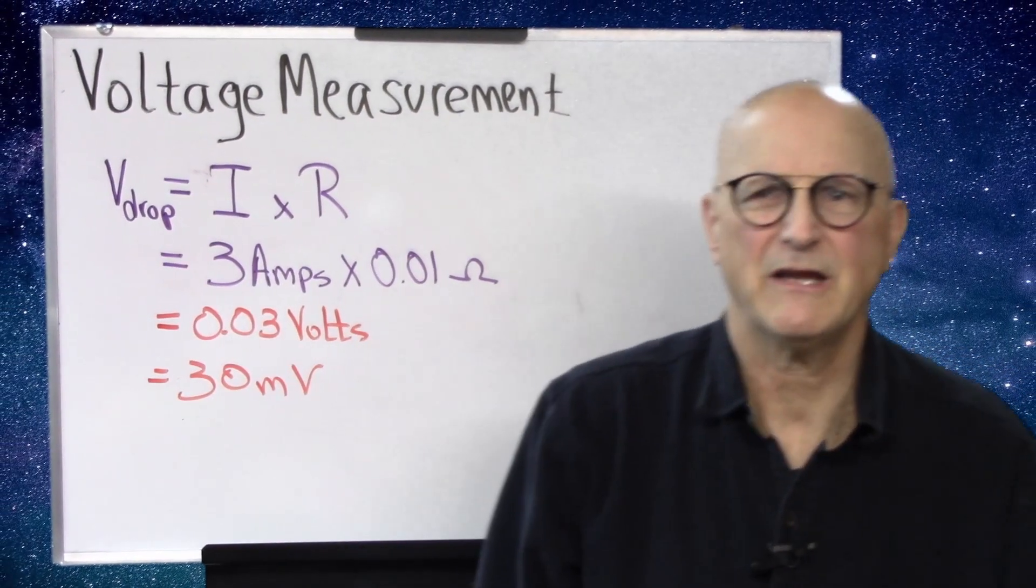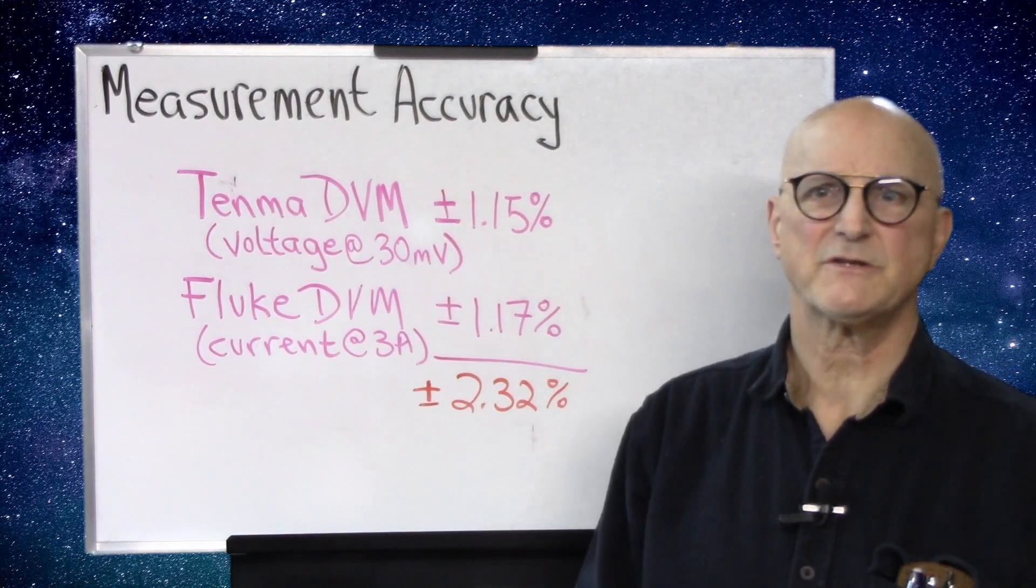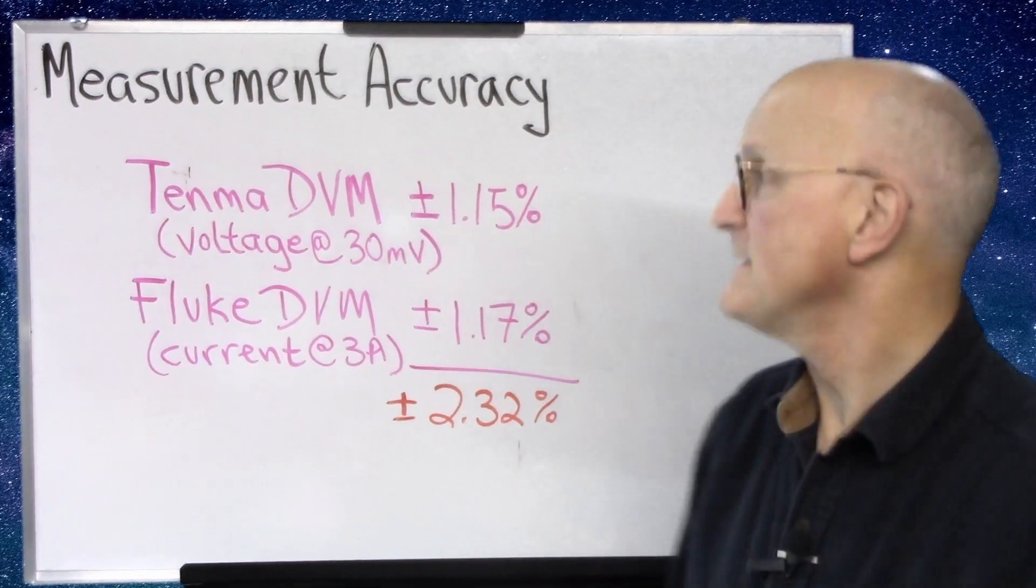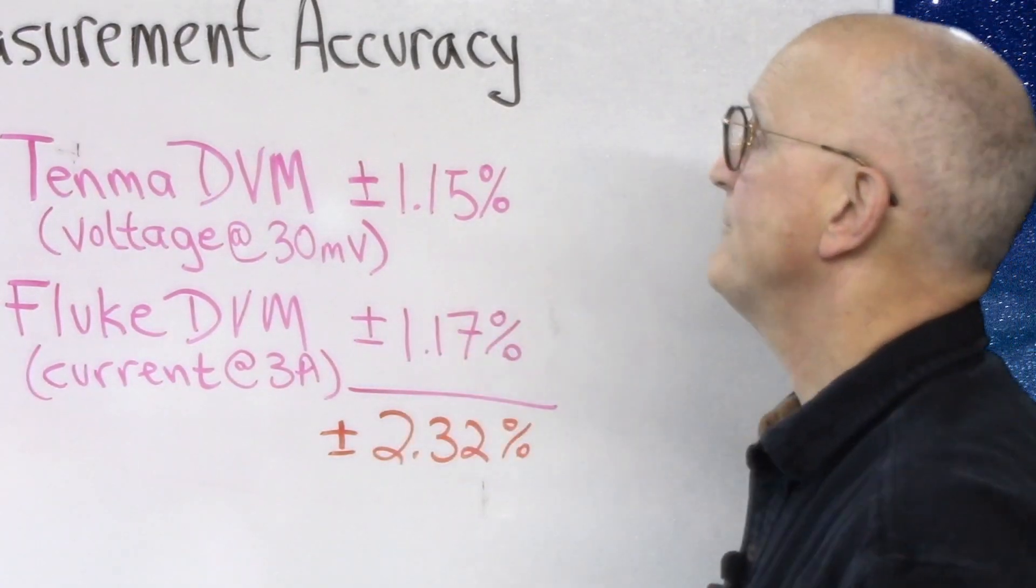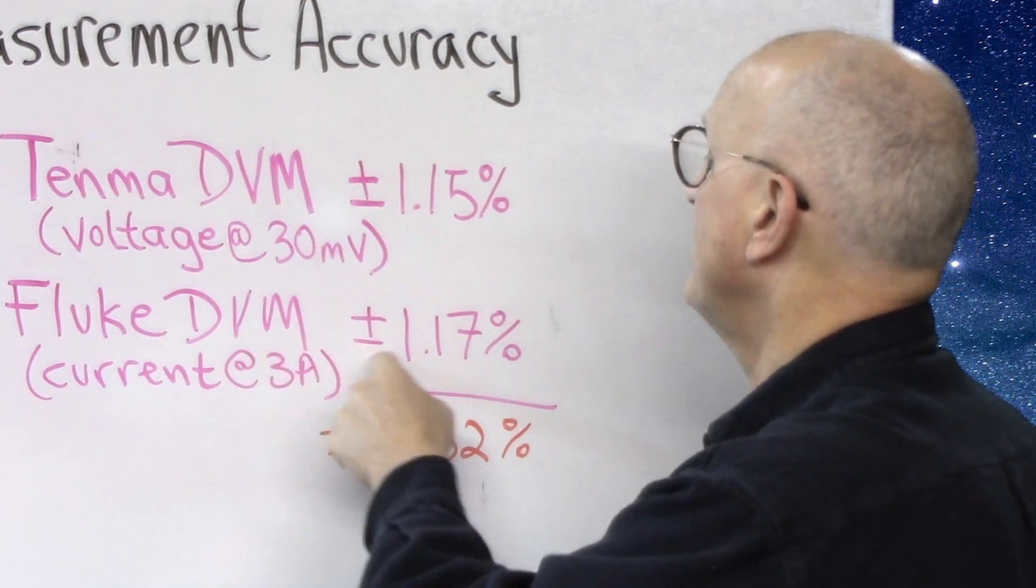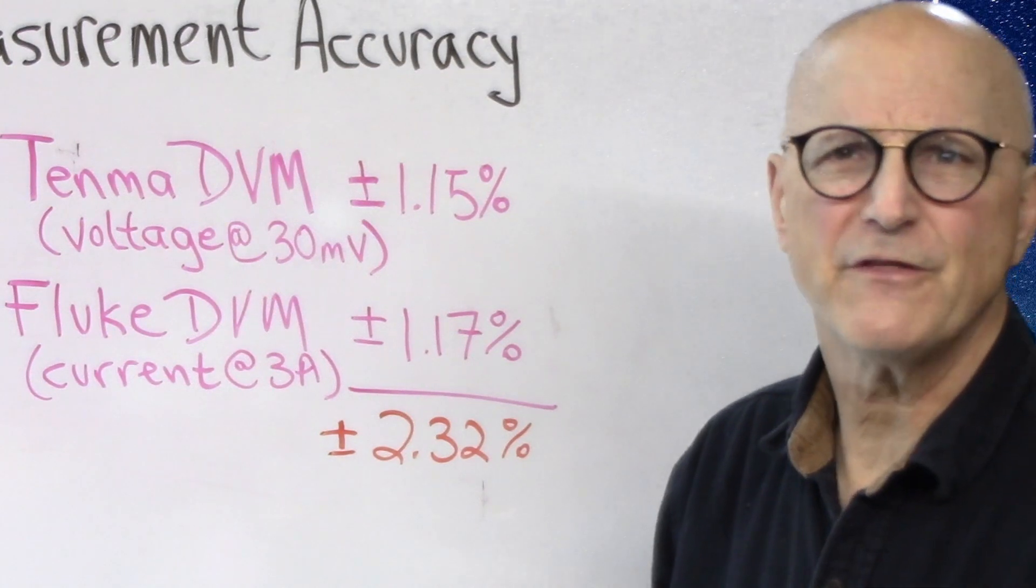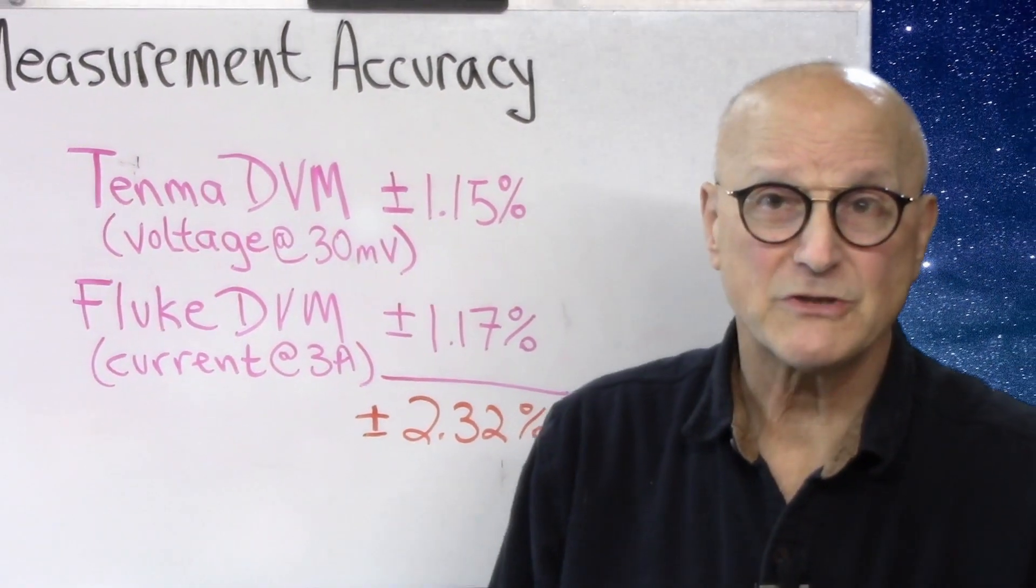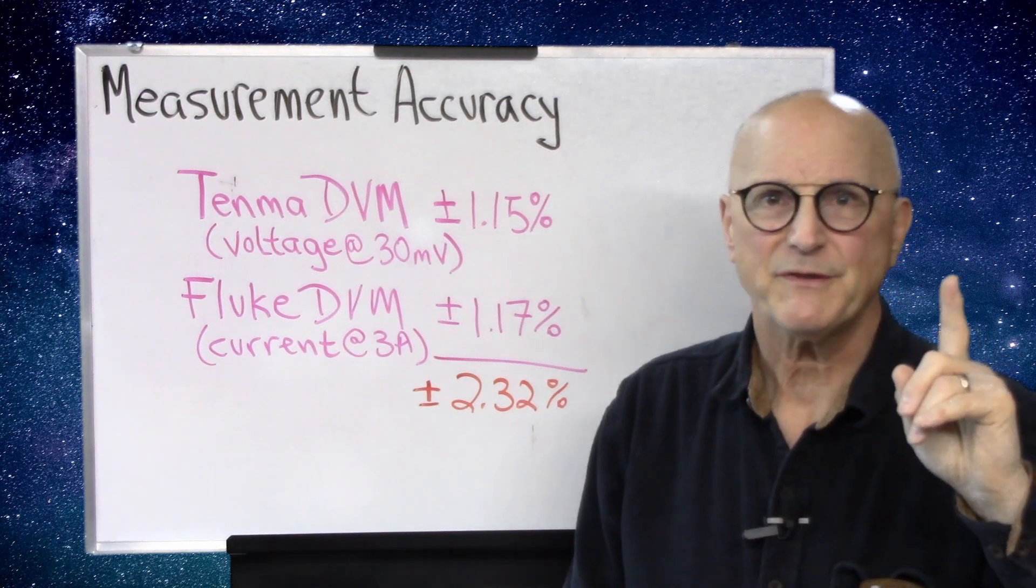Now you might wonder why I keep talking about the accuracy of my measurement devices. It is because the accuracy of the test equipment we use to make the measurement affects the accuracy of the measurement that we make. The degree of uncertainty is additive. In this case, if my 10 mid-DVM is off by its maximum tolerance of 1.15% for our 30 millivolt measurement, and at the same time, our fluke is off by its maximum of 1.17% in our measurement of 3 amps, that means that the total uncertainty for this measurement of this resistor is going to be plus or minus 2.32%. Now it's probably going to be closer than that, but this is all we can guarantee if our equipment is working properly.